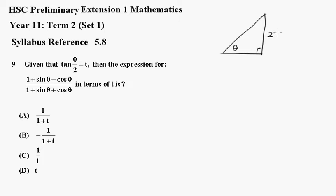Put 2t there and a 1 minus t squared there and a 1 plus t squared there. Alright, so sin theta equals 2t over 1 plus t squared and cos theta equals 1 minus t squared over 1 plus t squared.